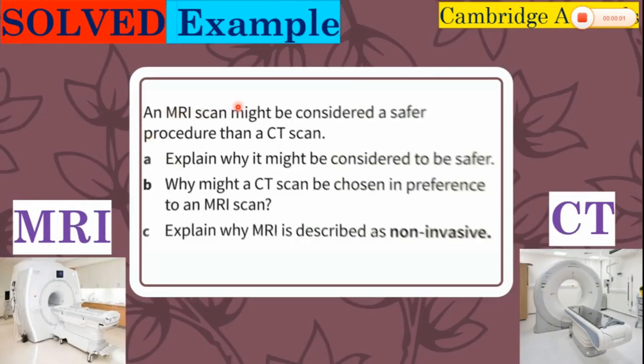Let's take an example from Cambridge A-level curriculum for physics students. An MRI scan might be considered a safer procedure than a CT scan. Part A: explain why it might be considered safer. The answer is that MRI uses non-ionizing radio frequency electromagnetic radiation, whereas CT scanning uses X-rays, which are a form of ionizing radiation. Part B: why might a CT scan be chosen in preference to an MRI scan? The answer is that CAT scans show up bone, which is poorly imaged by MRI. Part C: explain why MRI is described as non-invasive. The answer is that the patient's body does not have to be cut open, nor do any instruments have to be inserted into the body.